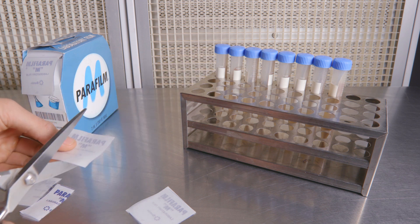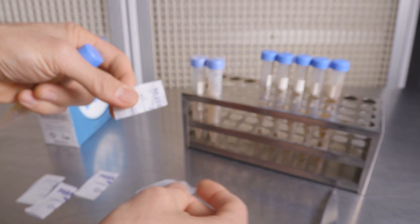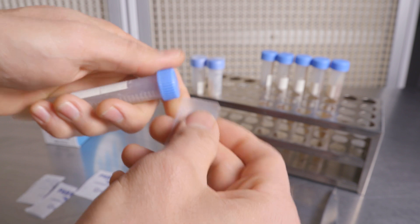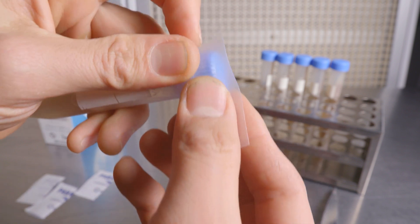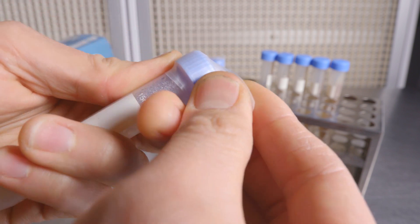If you are using parafilm, just simply cut a square and cut that square into half. And then you'll take the piece of parafilm and just stretch it over the cap. Be sure that you're wrapping underneath the cap as well as over the cap. That way you have an airtight seal.